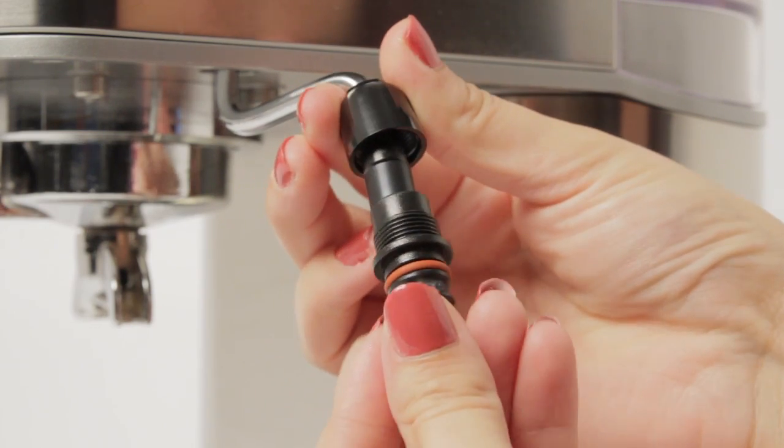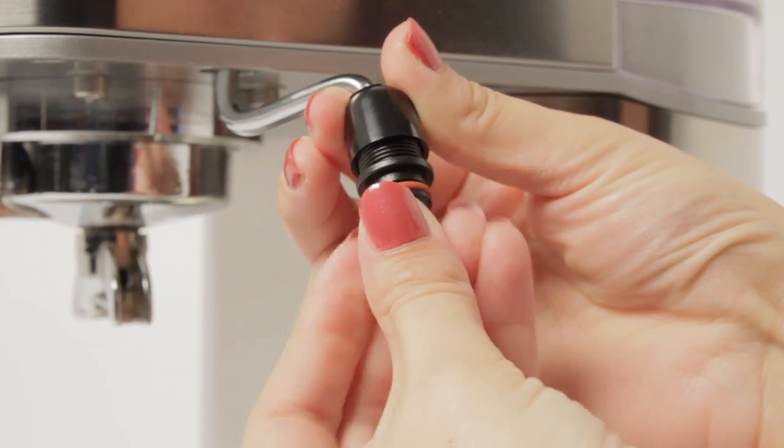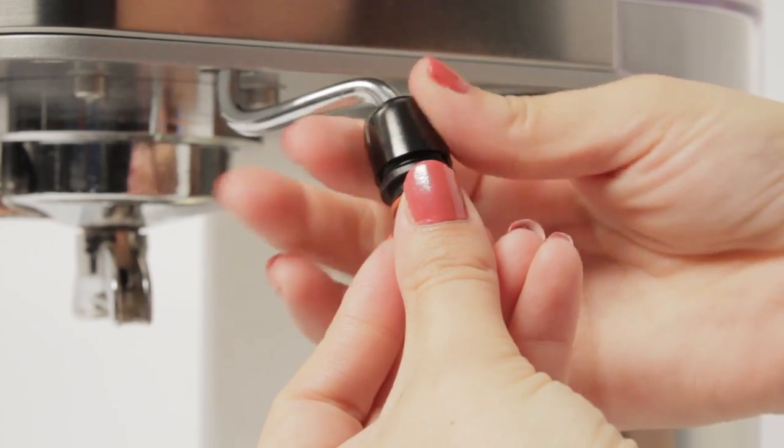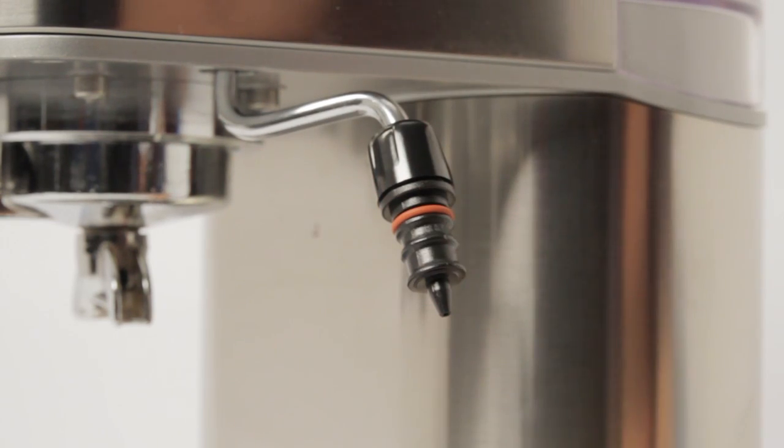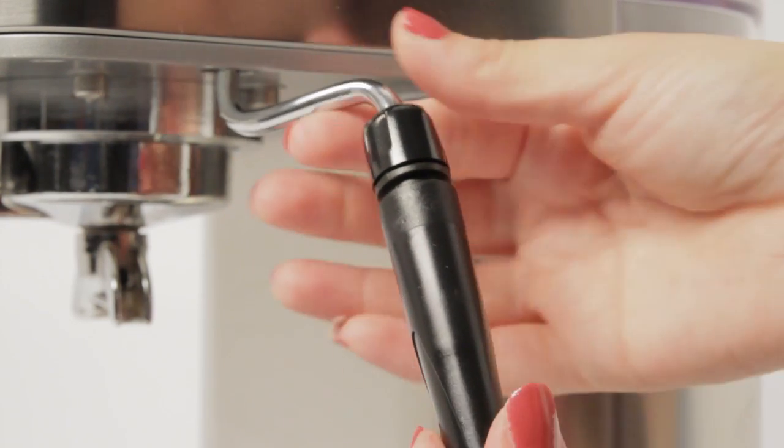Next, slide on the inner wand and screw down the cap nut securely. Then push the outer sleeve onto the inner sleeve.